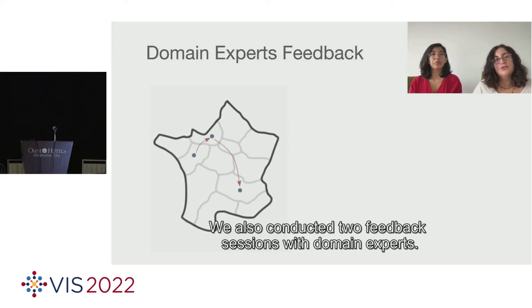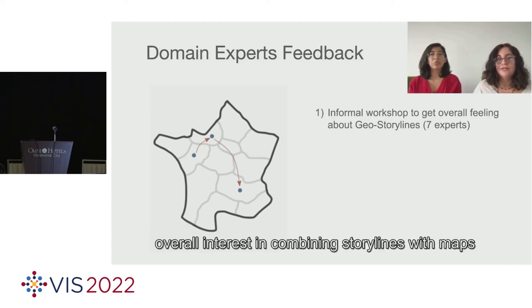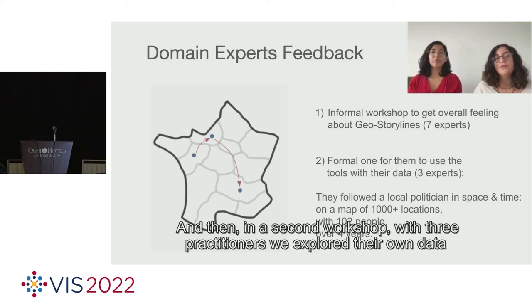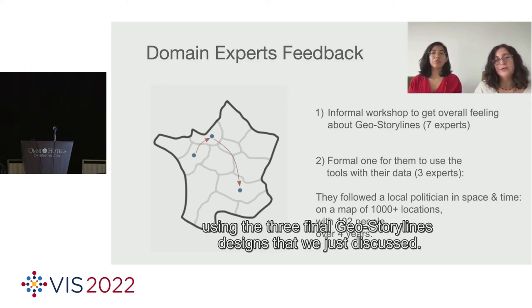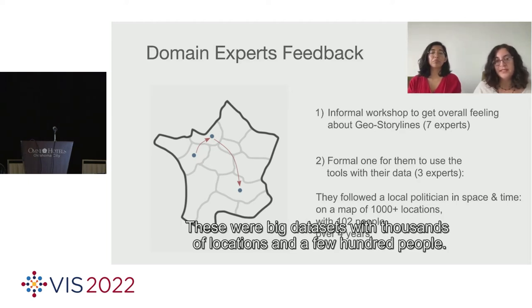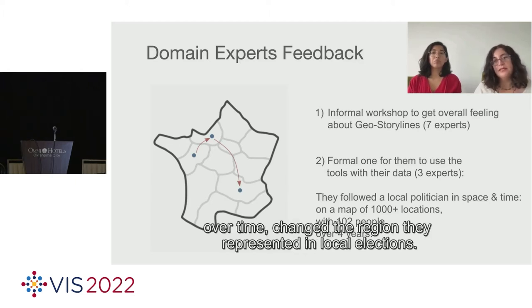We also conducted two feedback sessions with domain experts. First, with seven investigative journalism practitioners, we got feedback about their overall interest in combining storylines with maps in order to analyze the movements and relationships of politicians for their articles. And then in a second workshop with three practitioners, we explored their own data using the three final geostoryline designs that we just discussed. They used their own datasets that contained relationships extracted from news articles. These were big datasets with thousands of locations and a few hundred people.